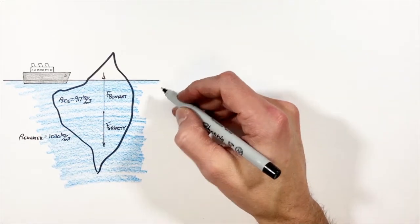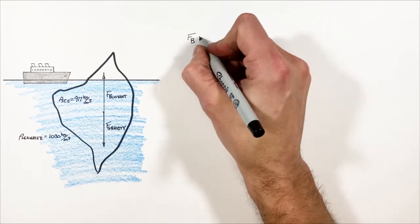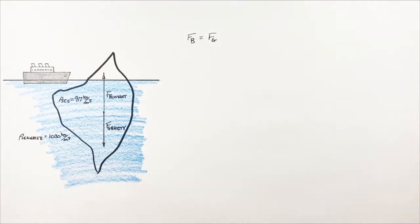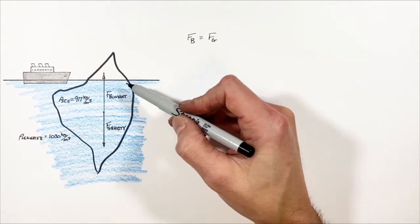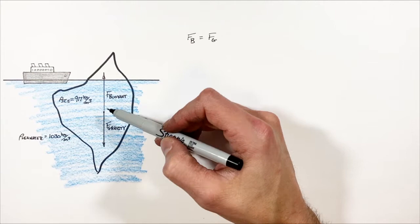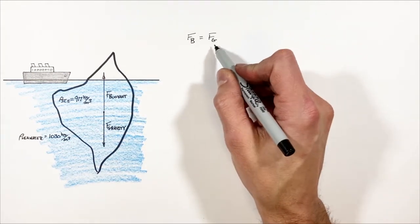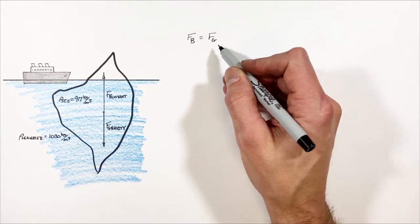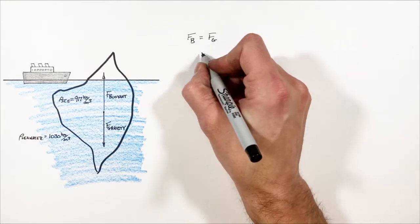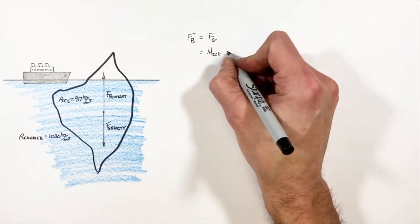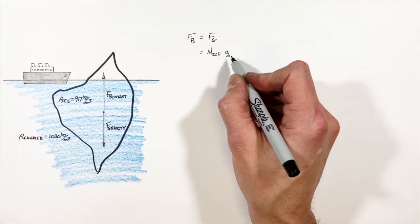Now mathematically, we can show this as the buoyant force is equal in magnitude to the force by gravity. Now you'll notice I haven't given you a size or dimensions of this iceberg and I haven't given you a mass, so coming up with the actual force by gravity is impossible. But what we can say is this force by gravity is given by the mass of ice multiplied by the acceleration due to gravity.